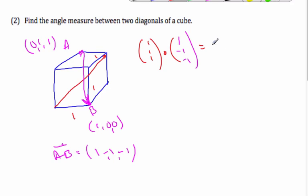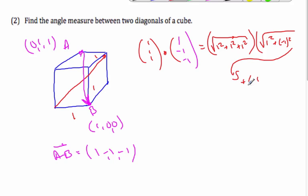This is equal to the magnitude of (1, 1, 1) times the magnitude of (1, -1, -1) times cosine of the angle, where this angle between the diagonals is theta.